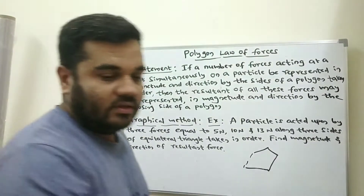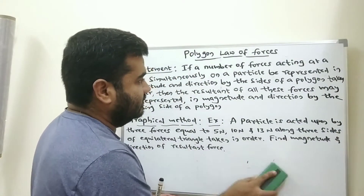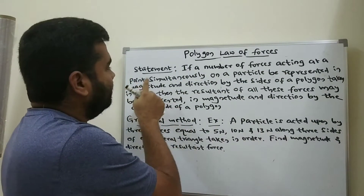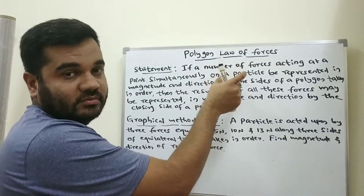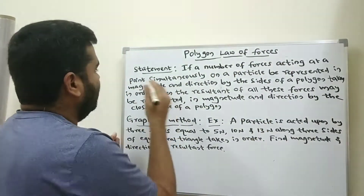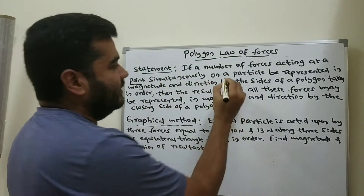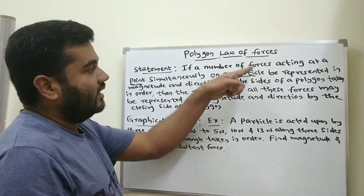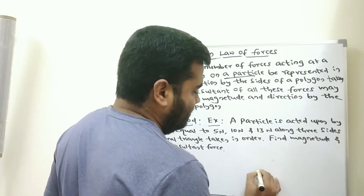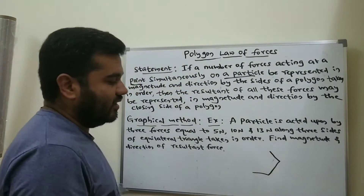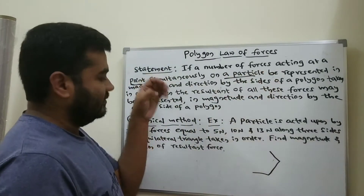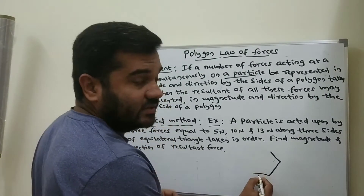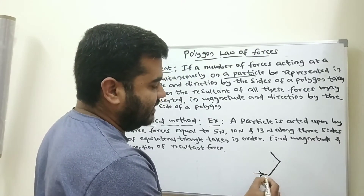The statement is: if a number of forces are acting at a point simultaneously on a particle — suppose one force, two forces, three forces, a number of forces acting at a point simultaneously on a particle — and they are represented in magnitude and direction...